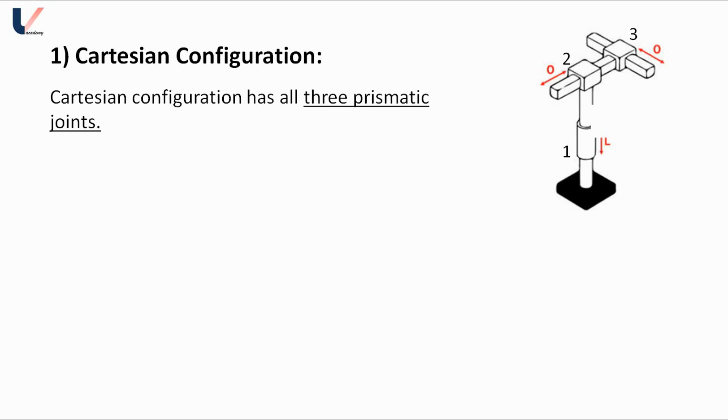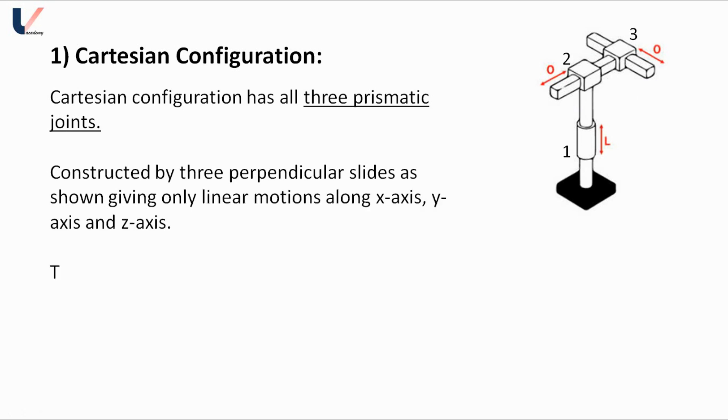It has three joints, all of these are prismatic. Here at joint one, only linear motion along the Z axis is possible, and joint two along the X axis, and joint three along the Y axis. Only linear motions are possible. There is an upper and lower limit for movement of each link. The workspace here is cuboidal.